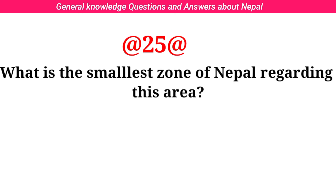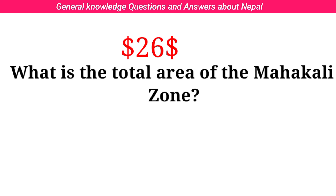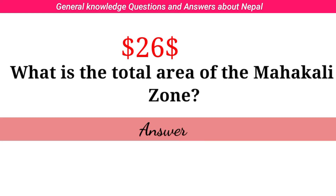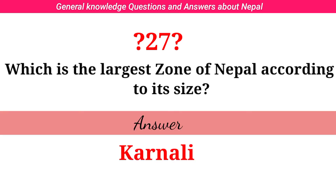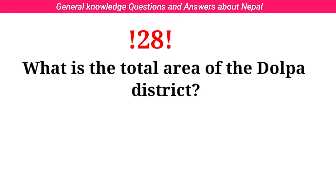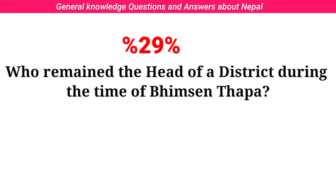What is the smallest zone of Nepal regarding its area? Answer: Mahakali. What is the total area of the Mahakali Zone? Answer: 6,989 square kilometers. Which is the largest zone of Nepal according to its size? Answer: Karnali. What is the total area of the Dolpa District? Answer: 7,889 square kilometers. Who remains the head of a district during the time of Bhimsen Thapa? Answer: Amali.